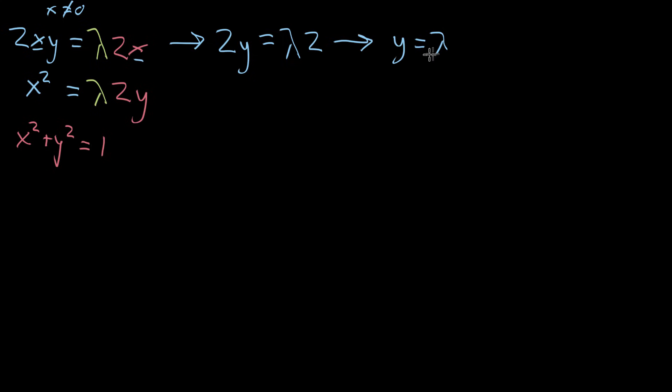And for this next equation, we can use what we just found, that y is equal to lambda, to replace the lambda that we see. And instead, if I replace this with a y, what I'm gonna get is that x squared is equal to y times two times y, so that's two times y squared. And I'll leave it in that form because I see that in the next equation, I see an x squared, I see a y squared.